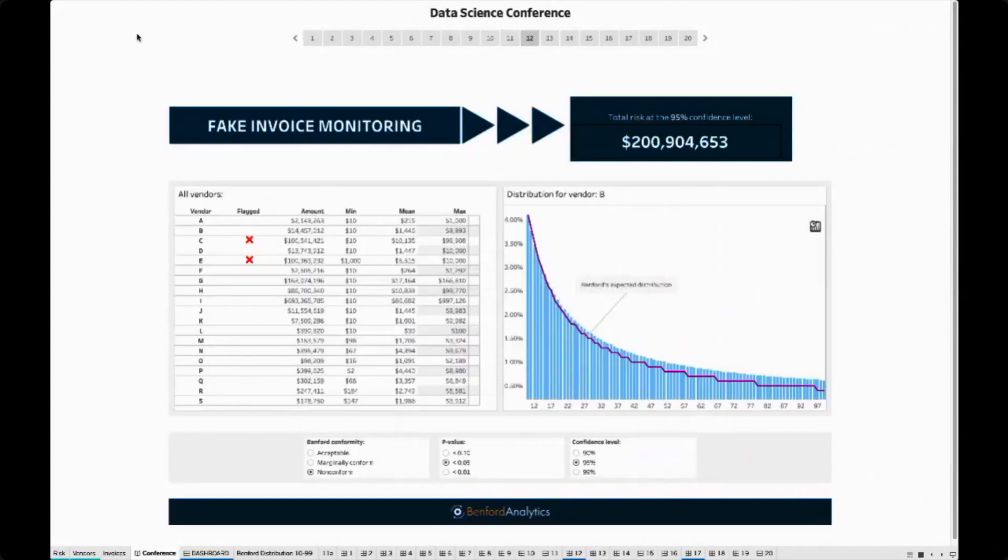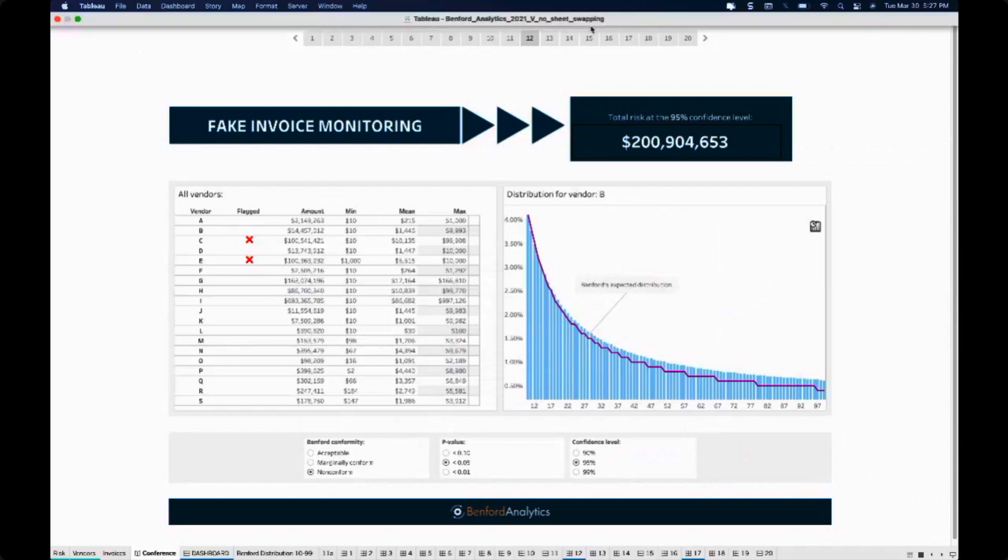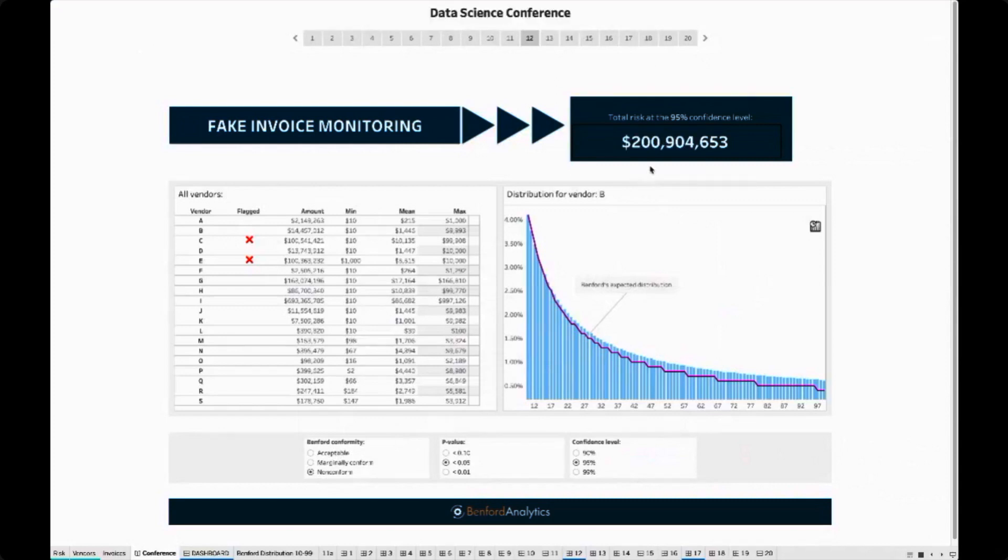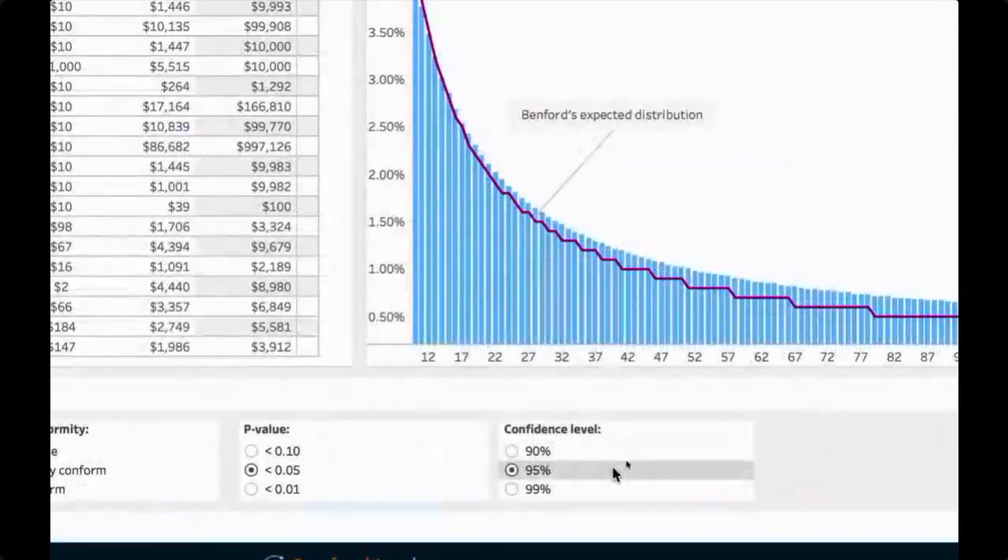Now let's look at the Tableau dashboard for fake invoice monitoring we've created. Technically, we can never be 100% sure if a data set is fraudulent or not. Therefore, we need a somehow of a probabilistic approach. For example, here we have a total risk of around $200 million in fake invoice at 95% confidence level. And with Tableau's parameters, we can control the confidence level. For example, we could change the confidence level to 99% or 90% in this case.